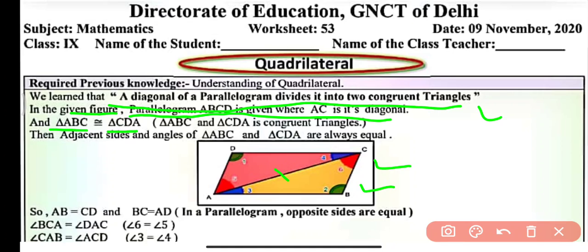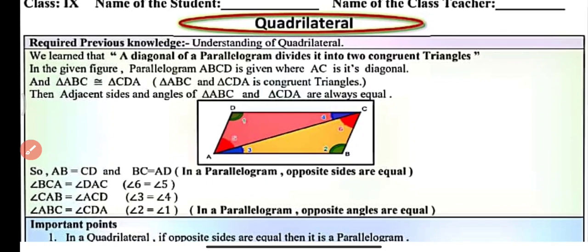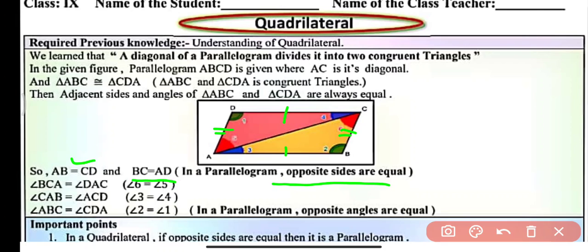You can see here triangle ABC is congruent to triangle CDA, so the adjacent sides and adjacent angles of triangle ABC and CDA are always equal. So here AB will be equal to CD, and similarly BC will be equal to AD. These are opposite sides of the parallelogram.